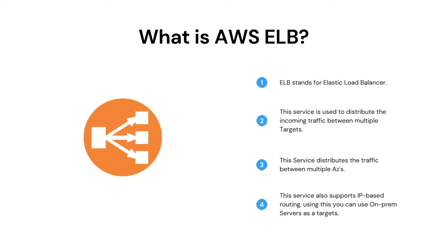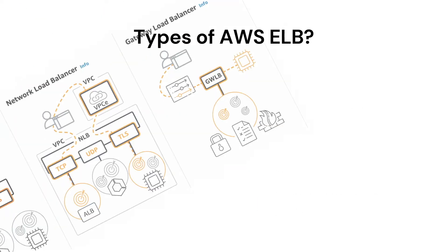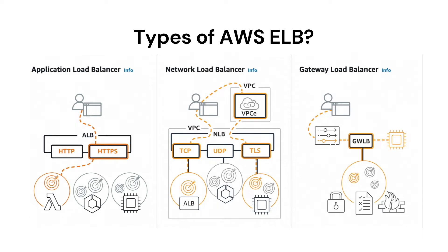Elastic load balancing supports the following load balancers: Application load balancers, Network load balancers, Gateway load balancers, and Classic load balancers. There are four types of load balancers available in AWS for your use. The first is Classic load balancer, which is a previous generation load balancer. The second is Application load balancer, the third is Network load balancer, and the last is Gateway load balancer. You can choose the best solution as per your requirements.